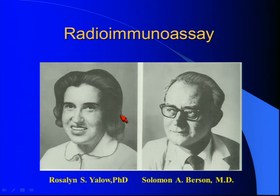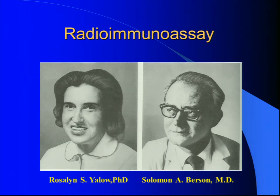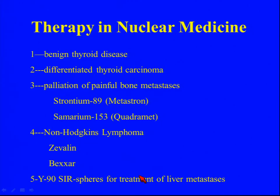Drs. Roslyn Yallo and Saul Burson developed a technique called radioimmunoassay, used to measure tiny amounts of substances in the body and bloodstream. They used it originally for insulin — it's now used for drug overdose and many other things. Dr. Burson died, but Dr. Yallo won the Nobel Prize for this discovery. Therapies in nuclear medicine include thyroid treatment for hyperthyroidism and thyroid cancer, treatments for bone metastases to help with pain, antibody treatments for non-Hodgkin's lymphoma, and treatments where we put radioactive spheres directly through an artery into the liver for very selective cancer therapy. These therapeutic agents are beta emitters, not gamma emitters.